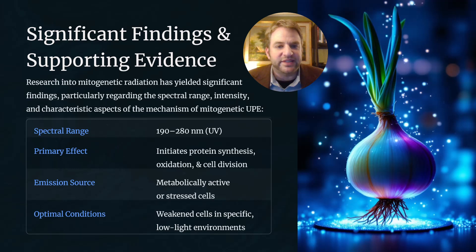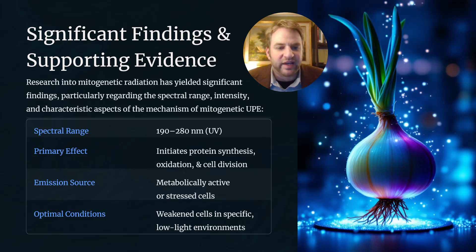Research into mitogenetic radiation has yielded significant findings, particularly regarding the spectral range, intensity, and characteristic aspects of the mechanism of mitogenetic ultra-weak photon emissions. The spectral range of the mitogenetic UPE is around 190 to 280 nanometers, essentially in the UV-C range of the spectrum, although some effects have been detected in the presence of visible light up to 326 nanometers. The primary effect is to initiate protein synthesis, oxidation reactants, and as a result, cell division. The emission source is in metabolically active or possibly also stressed cells that have been stimulated artificially in the laboratory.